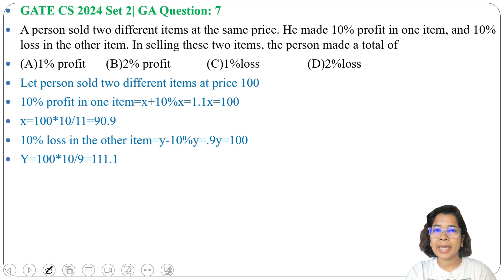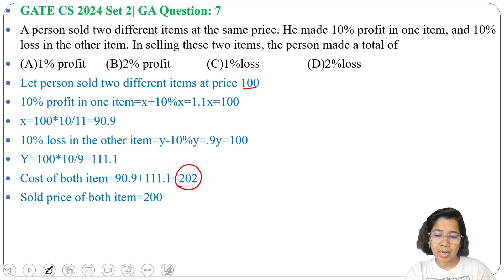The cost of both items is 90.9 plus 111.1, which equals 202. He bought for 202 and sold for 200, 100 for each item. The loss is 202 minus 200, which is 2 rupees.